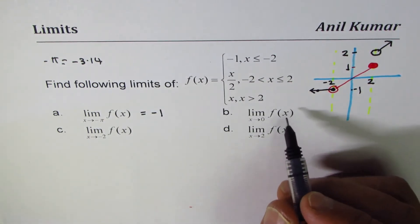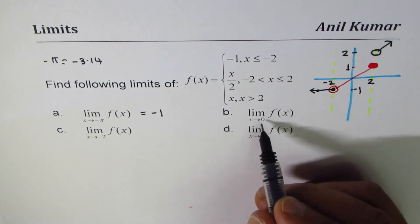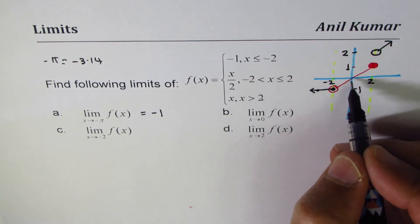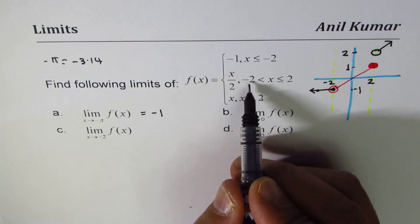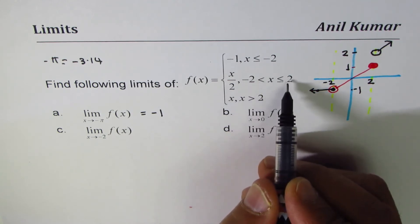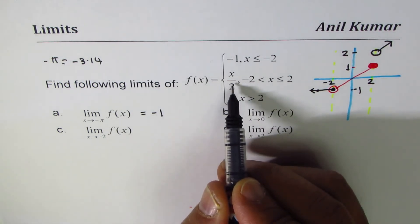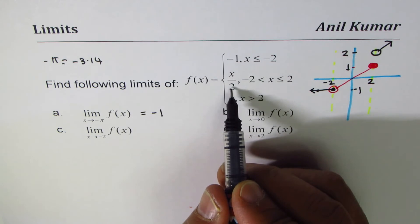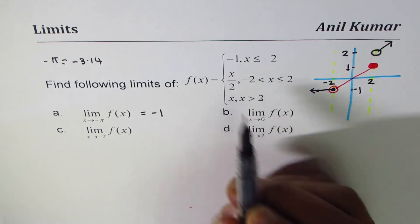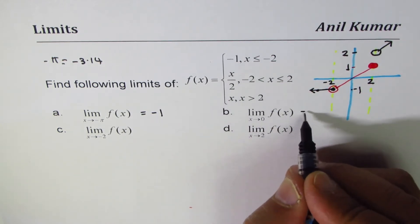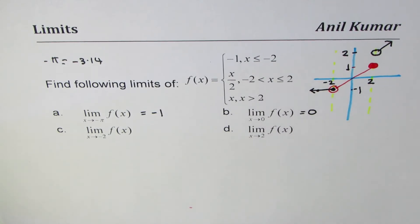The second limit is as x approaches 0. Since 0 is between -2 and 2, the second piece f(x) = x/2 applies. Substituting 0 gives 0/2 = 0. The function is continuous here, so the limit exists and equals 0.